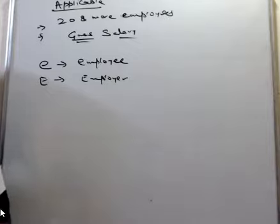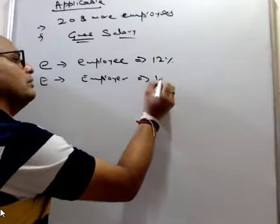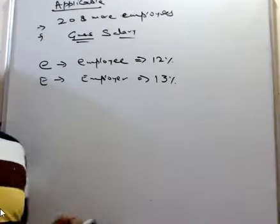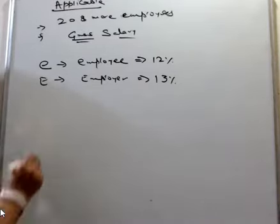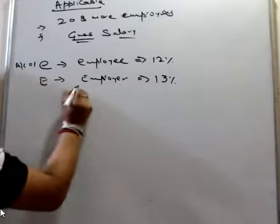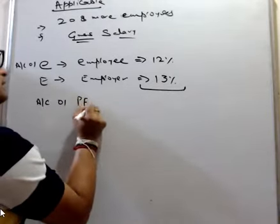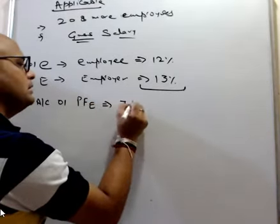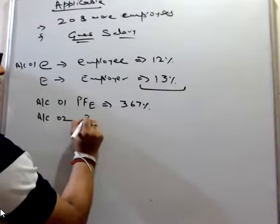Let's see the contribution. I am representing small E as employee, capital E as employer. Employee will contribute twelve percent and employer will contribute thirteen percent. Initially it was basic, now it's on the gross. This will also be called as account number one.